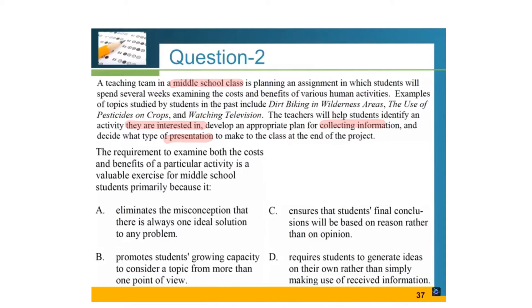One of the keywords is 'teaching team,' which is where two teachers from the same subjects work together collaboratively to teach students. This question asks why examining both the costs and benefits of a particular activity is important for middle school students. This is also related to Piaget's human development stages. Examining both costs and benefits of something will make people gain different points of view, so answer B looks closest to what we need. By the way, if we see comparisons in the answers such as 'more than' or 'rather than,' those answer choices are not generally correct.